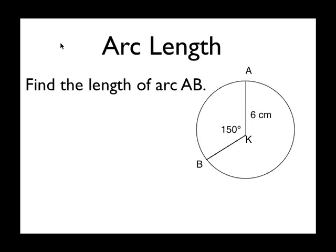In this case we're wanting to find the length of arc AB, so from A to B. First we're given that a circle has a radius of 6 centimeters and a central angle of 150 degrees.